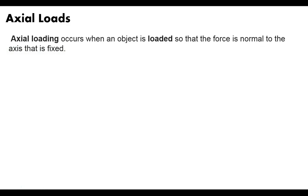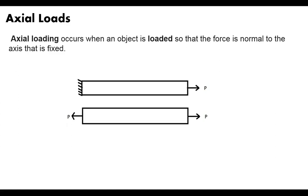So we can define axial loading. Axial loading occurs when an object is loaded so that the force is normal to the axis that is fixed. We can look at this visually — we've got two different members, one that's actually fixed and one that's a free body diagram of the one that's fixed. The object is loaded so that the force P is normal to the axis that is fixed, going right along the axis of the member. So it's axially loaded.